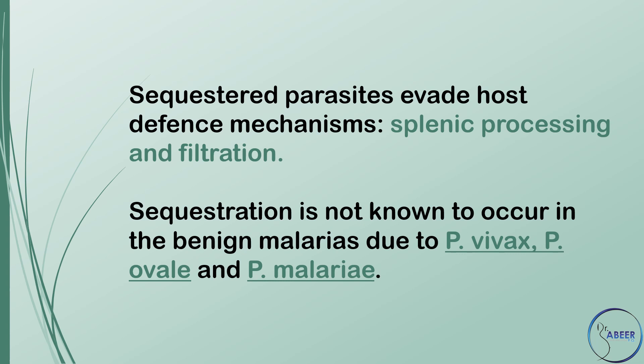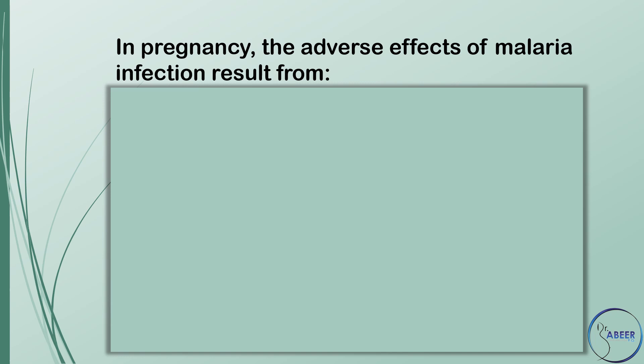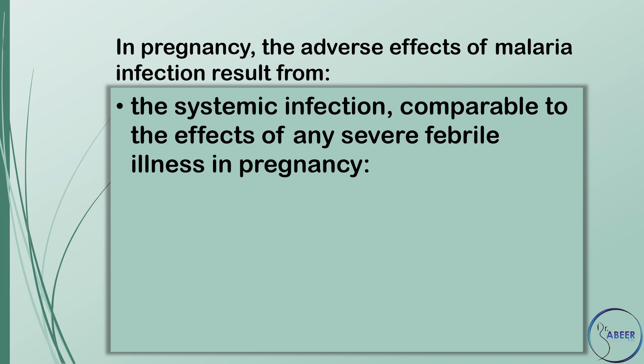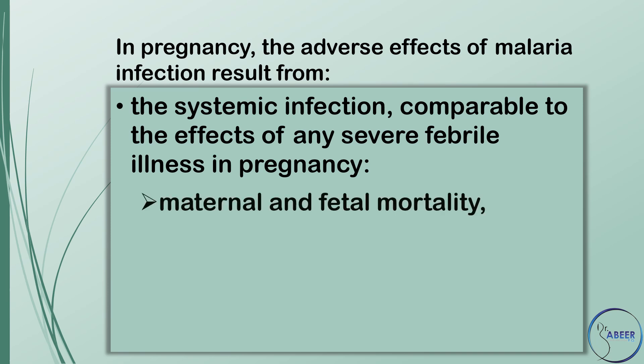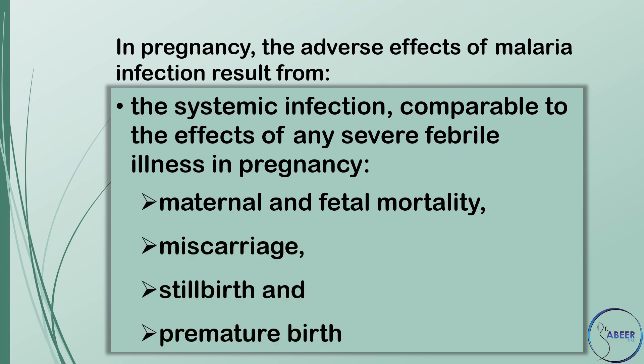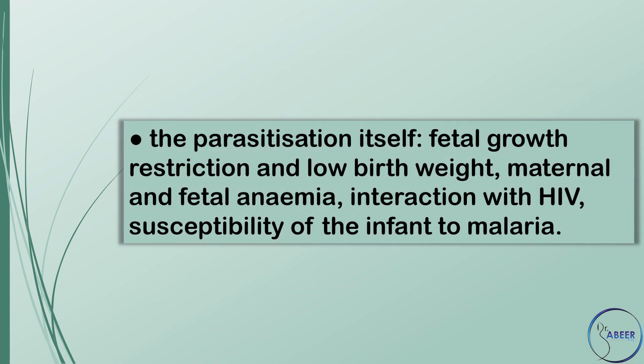Sequestration is not known to occur in the benign malarias due to Plasmodium vivax, Plasmodium ovale, and Plasmodium malariae. In pregnancy, the adverse effects of malaria infection result from: the systemic infection, comparable to the effects of any severe febrile illness in pregnancy; maternal and fetal mortality, miscarriage, stillbirth, and premature birth; and the parasitization itself — fetal growth restriction and low birth weight, maternal and fetal anemia, interaction with HIV, and susceptibility of the infant to malaria.